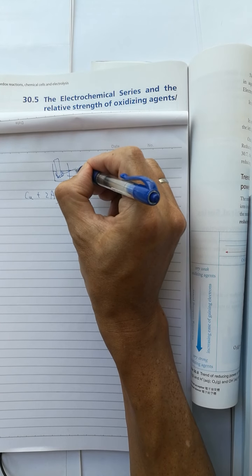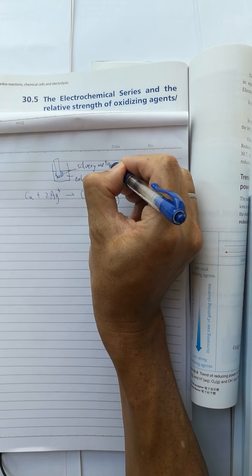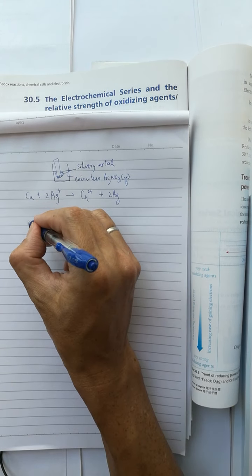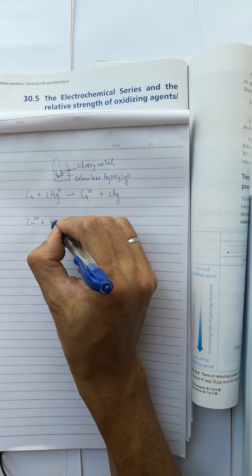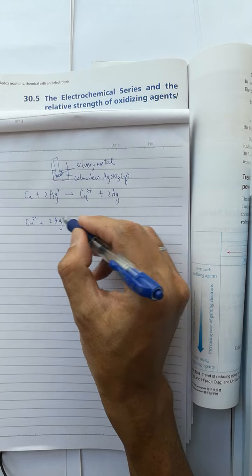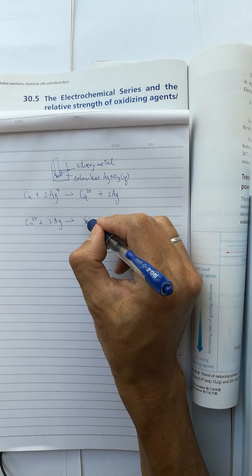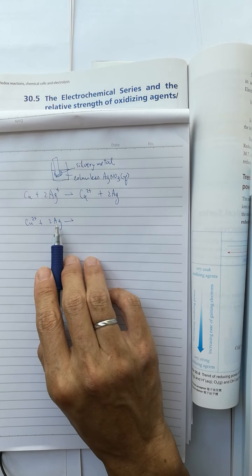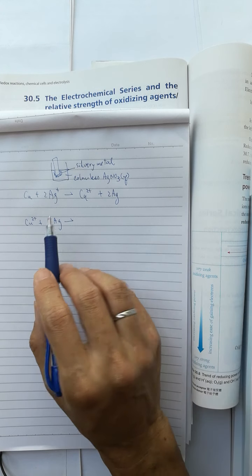And then when you reverse the equation, for example, we put a silver metal into the copper two solution. We know that the silver metal is less reactive than copper metal.